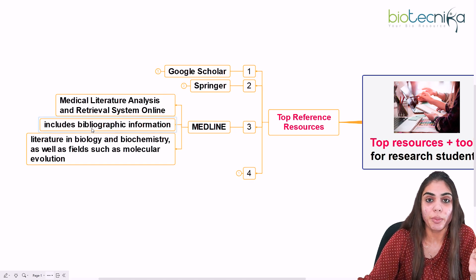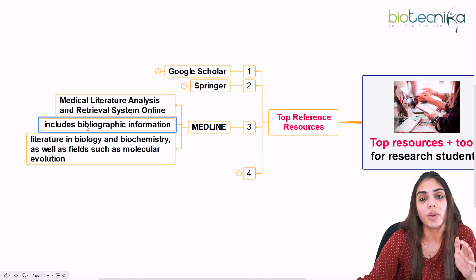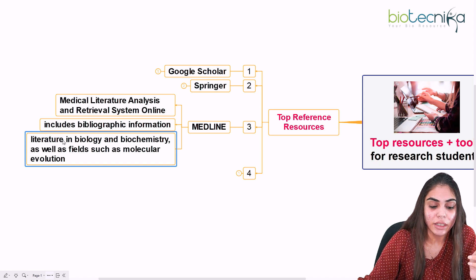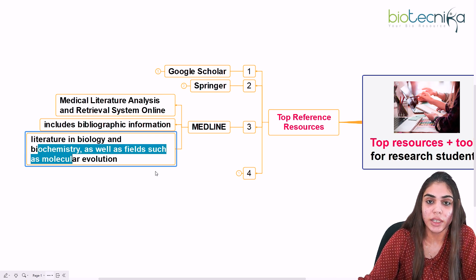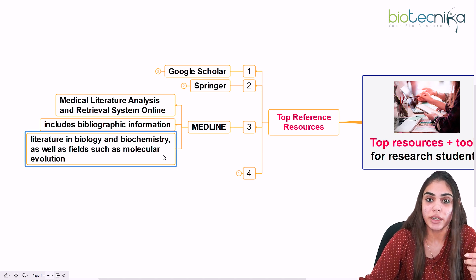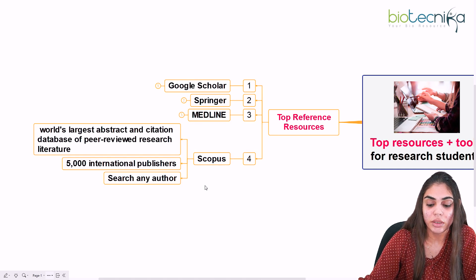The third reference resource is MEDLINE, which stands for Medical Literature Analysis and Retrieval System Online. If you want to search bibliographic information, you can use MEDLINE. It provides literature in the fields of biology, biochemistry, and molecular evolution specifically. It has a variety of literature and is going to be a great help, especially for biology and biochemistry-related subjects.